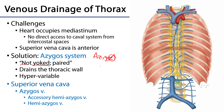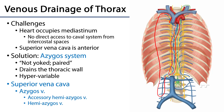The azygous system is what conducts the majority of blood from the walls of the thorax. It's extraordinarily variable, so we'll discuss the main patterns of drainage. We have an azygous vein — highlighted here — and it's going to drain into the superior vena cava. That azygous vein drains the majority of the intercostal spaces and subcostal spaces of the right thorax, as well as regions of the lumbar.